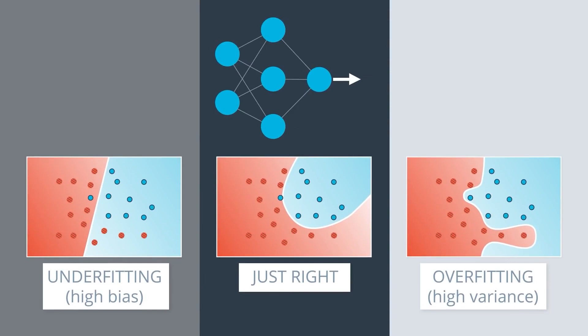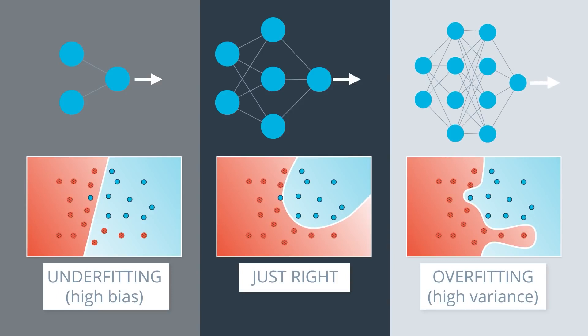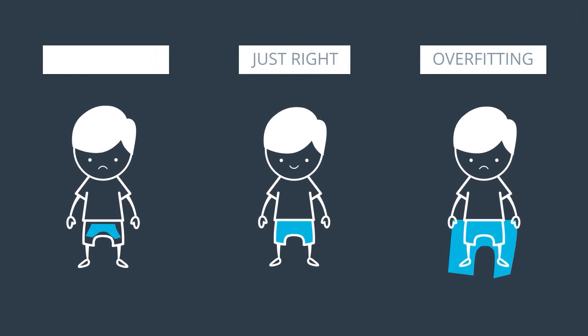The model in the middle will probably be a neural network with a slightly complex architecture. The one on the left will be an overly simplistic architecture — for example, the entire neural network is just one perceptron since the model is linear. The model on the right is probably a highly complex neural network with more layers and weights than we need. Now, here's the bad news: it's really hard to find the right architecture for a neural network. We'll always end up with either an overly simplistic or overly complicated one. So what do we do? It's like trying to fit in a pair of pants — if we can't find our size, it's less bad to go for slightly bigger pants and then use a belt to make them fit. We'll err on the side of overly complicated models and then apply certain techniques to prevent overfitting.